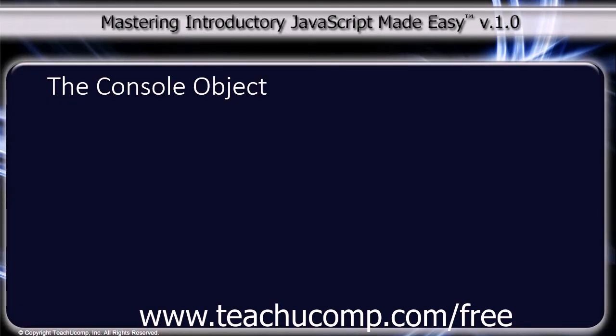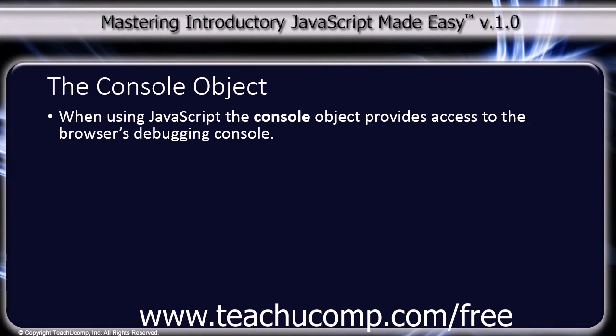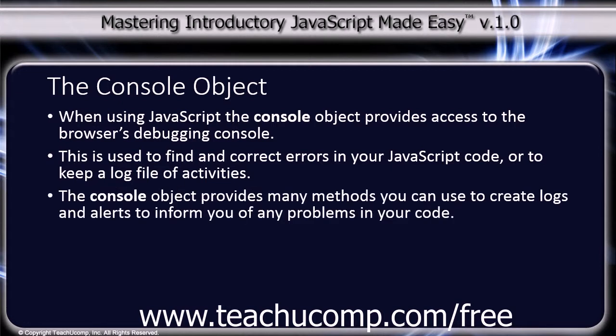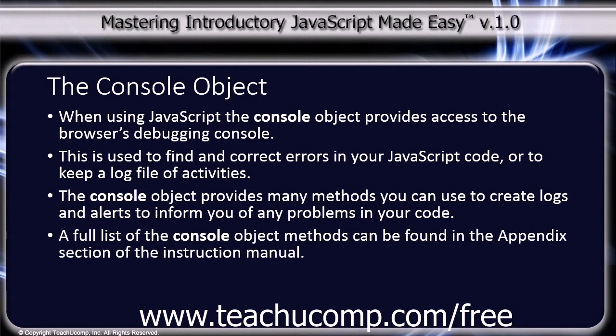When using JavaScript, the console object provides access to the browser's debugging console. This is used to find and correct errors in your JavaScript code or to keep a log file of activities. The console object provides many methods you can use to create logs and alerts to inform you of any problems in your code. A full list of the console object methods can be found in the appendix section of the instruction manual.